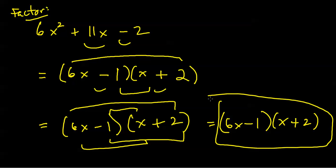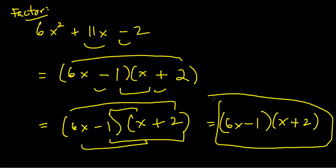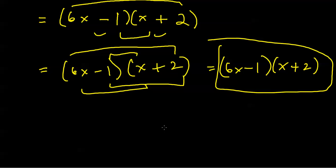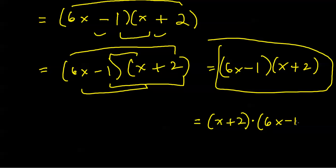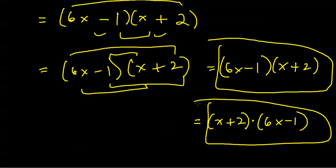Check: 6x squared plus 12x minus 1x minus 2. So my final answer is 6x minus 1 times x plus 2. You could rearrange the order of that multiplication and still get an acceptable answer because multiplication is commutative.